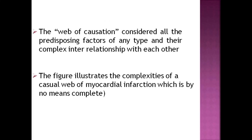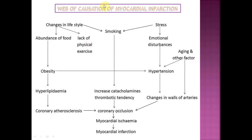In the web of causation, many factors have intricate relationships with each other — we cannot isolate one or two causes. Taking myocardial infarction as an example: lifestyle changes, smoking, and stress cause emotional disturbance leading to hypertension, artery wall changes, and coronary occlusion. Aging also causes hypertension, and changes in lifestyle cause obesity, which leads to hypertension and hyperlipidemia, resulting in atherosclerosis and coronary occlusion.